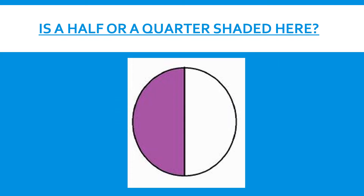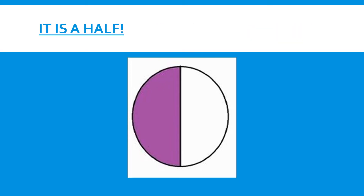Look at the circle here. Is this circle split into a quarter or a half? This circle was split into half — one over two. Half of the circle is coloured in purple.